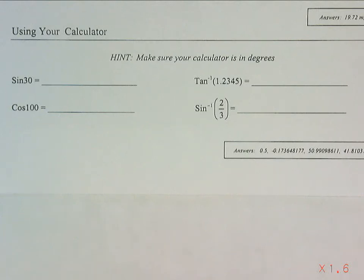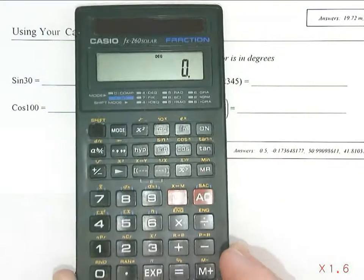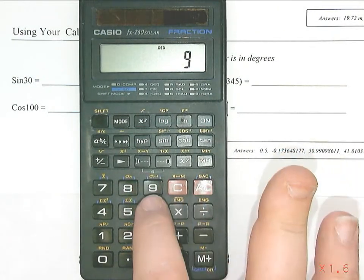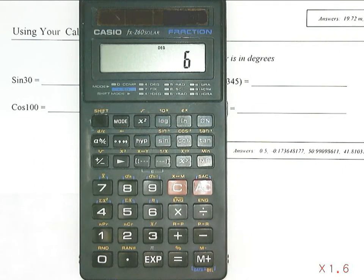To use your scientific calculator for trigonometry, the first thing you need to do is figure out what kind of calculator you have. This first calculator is one where if I type in 9 times 6, I do not actually see 9 times 6 appear on the screen.